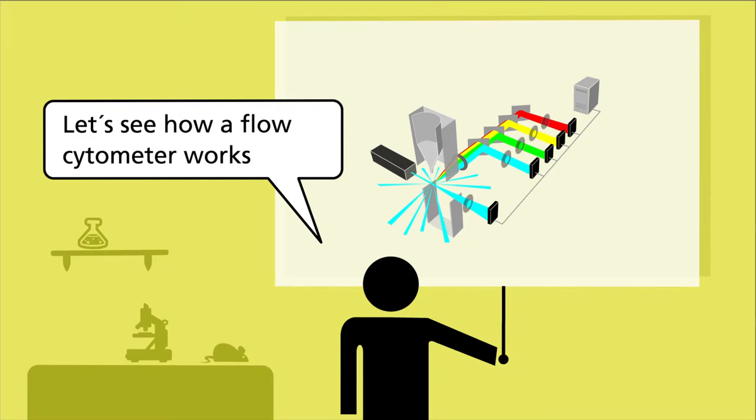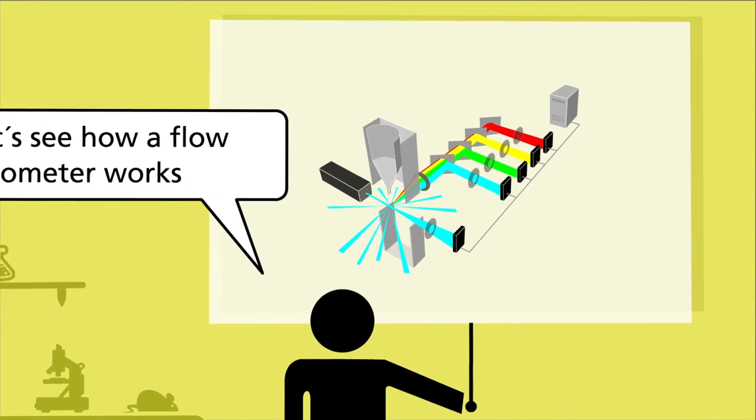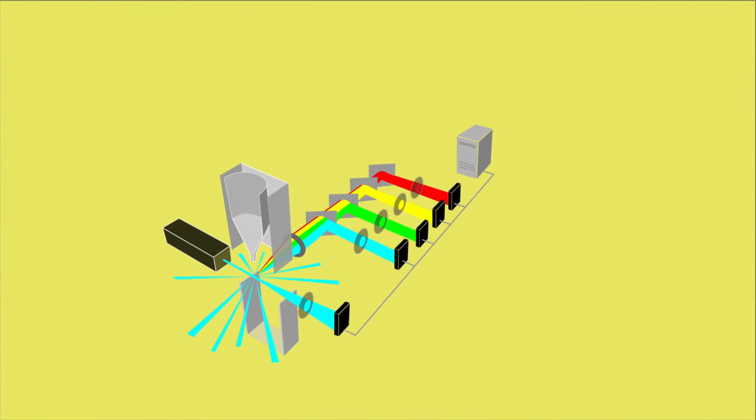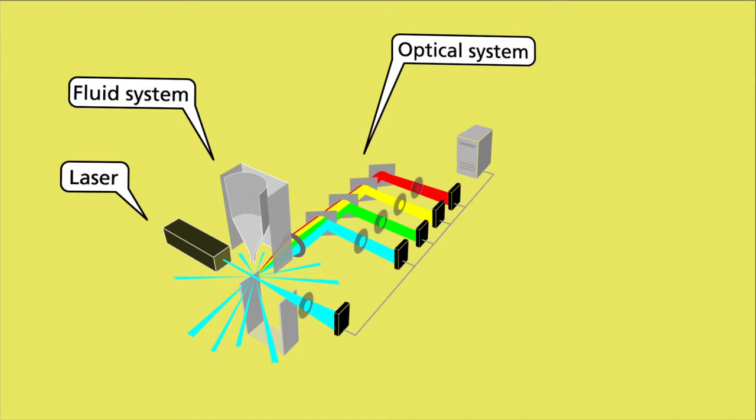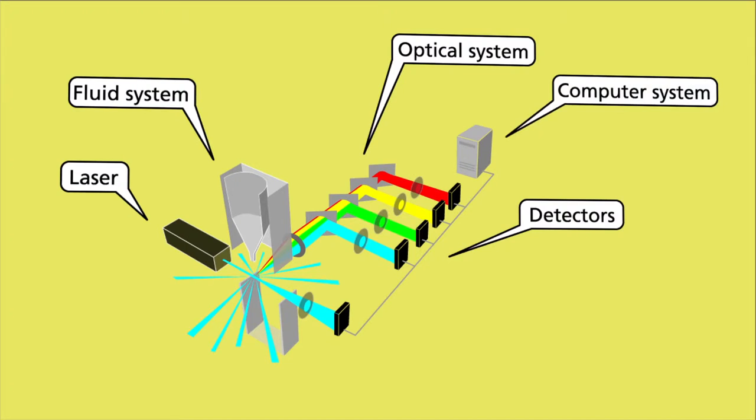Let's see how a flow cytometer works. The equipment has five elements: a fluid system, lasers, an optical system, the detectors, and the computer system.